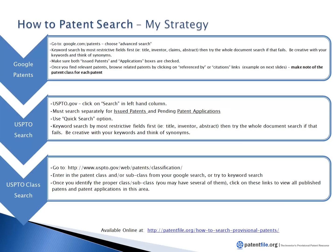I use Google Patents to find closely related patents to my idea, and I write down those patent application serial numbers as well as the patent classifications they're in. I then use that information to go to the US Patent and Trademark Office and use their search system, which is more robust and has more currently published applications. Google has a bit of a lag time, and the USPTO actually has more data — but Google is easier to search, which is why I start there. Finally, if I have time, I'll browse patents by their classification in the patent class system.